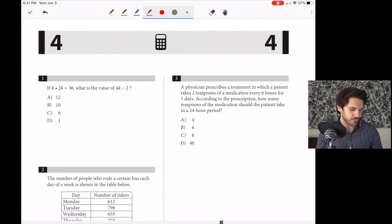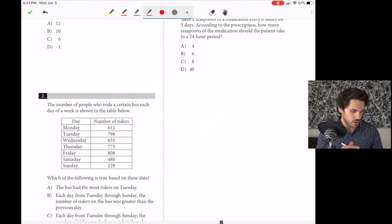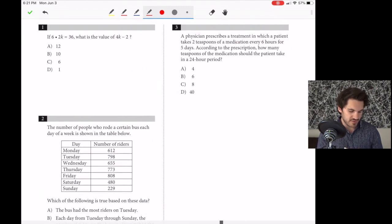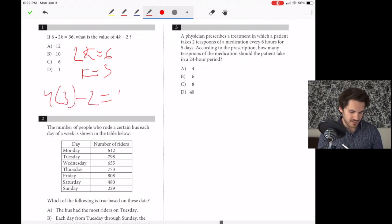Let's do number one. If 6 times 2k equals 36, what is the value of 4k minus 2? To figure this out, we need to find k. If 6 times 2k equals 36, divide both sides by 6, so 2k equals 6, and k equals 3. Then 4 times 3 is 12 minus 2 equals 10. So our answer is B, 10.